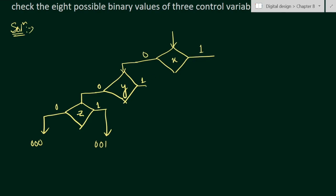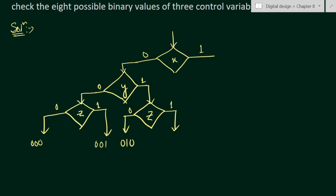Next, for the Y=1 path, we check Z again with another decision box. When X=0, Y=1, Z=0 we get combination 010. When X=0, Y=1, Z=1 we get combination 011. We have now covered all four combinations for the X=0 half.